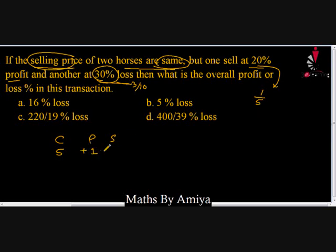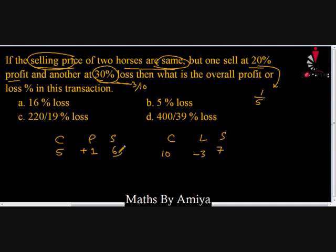For the first transaction: cost price is 5, profit is +1, so selling price is 6. For the second transaction: cost price is 10, loss is 3, so selling price is 7. According to the question, the selling prices must be the same — currently 6 and 7.